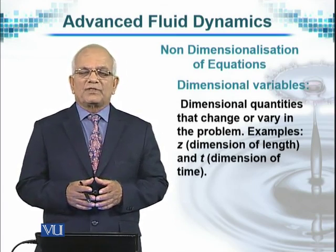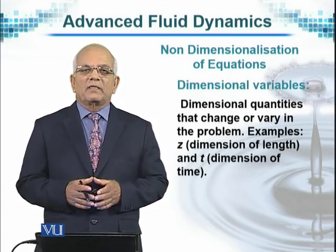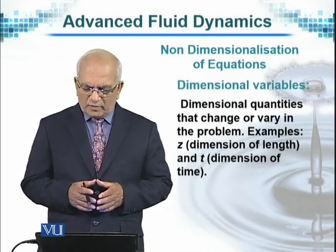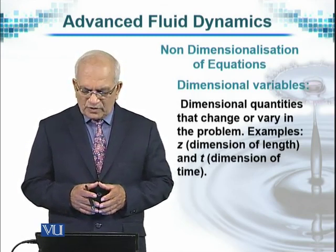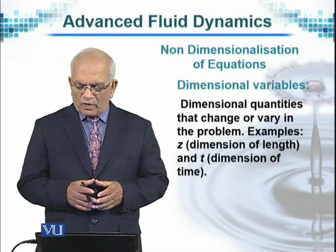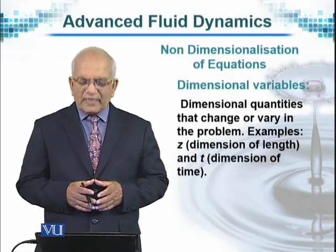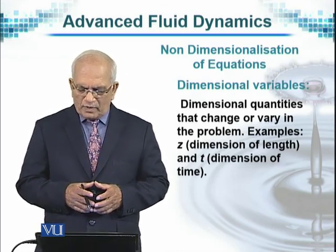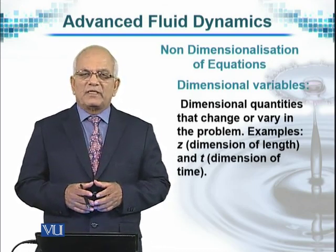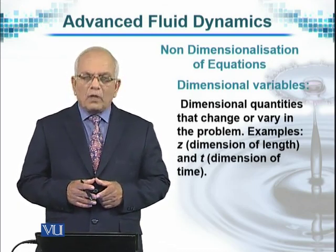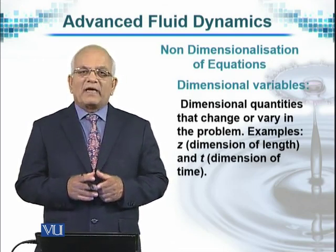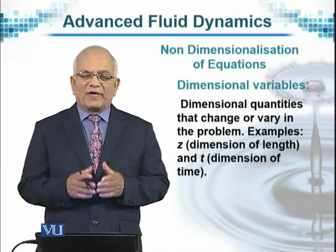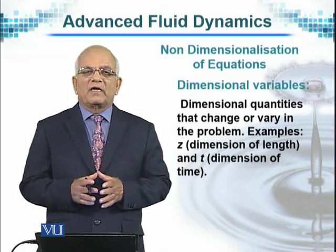Because while we are working with equations of motion, we need to understand the terminology properly. The dimensional variables or dimensional quantities in a given problem are, for example, Z — the dimension of length, or it can be X also — and T, the dimension of time. These are quantities that have dimensions and they come under the category of variables; they are variables having dimensions.